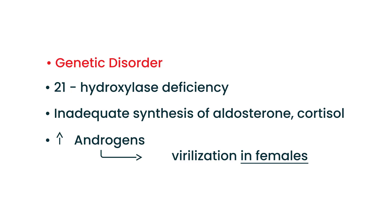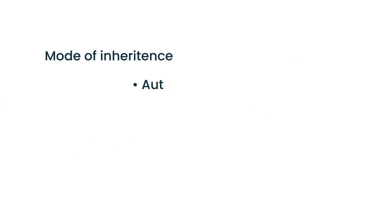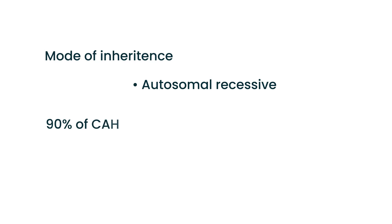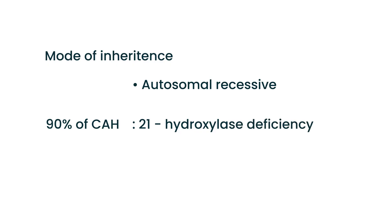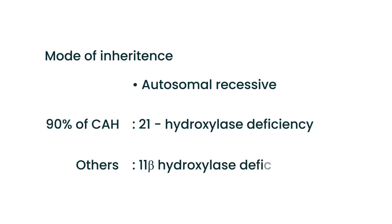That is the basic understanding of CAH. The mode of inheritance is autosomal recessive, and 90% of cases involve the deficiency of the enzyme known as 21-hydroxylase. There are other deficiencies that are part of CAH — for example, 11-beta hydroxylase deficiency — but the focus here is on 21-hydroxylase.